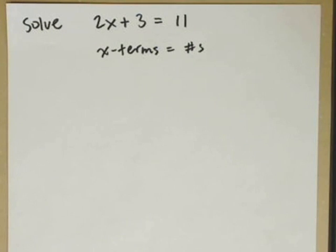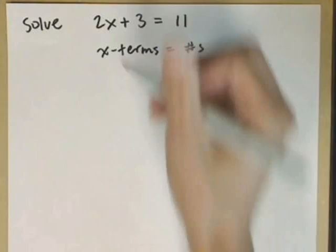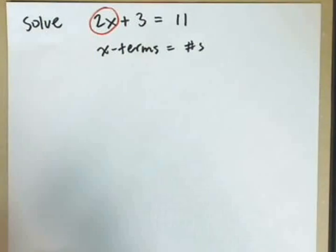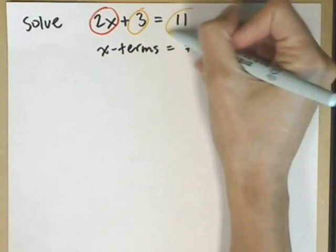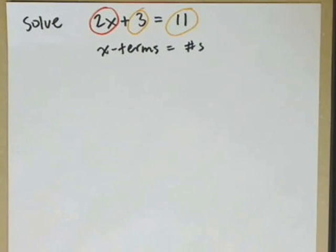So as I look at this, I notice that I've got a single x term, which is 2x, so that can stay where it is, but I've got two numbers, constants. One is on the left, and that's a 3. One is on the right, and that's 11.